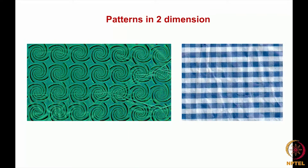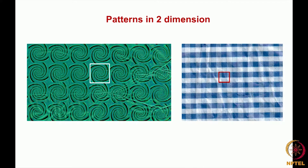Now let us look at a pattern in two dimensions. The first design is taken from a wallpaper or packing paper design. The pattern which repeats itself is the one shown in the white square, getting repeated by placing one on top of each other — it looks like a square pattern. The second is taken from a cloth. Here again you can identify the motif which is getting repeated. In both cases we have a square type of pattern but with two different motifs, so they look like two different designs.